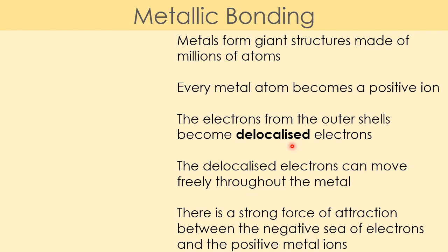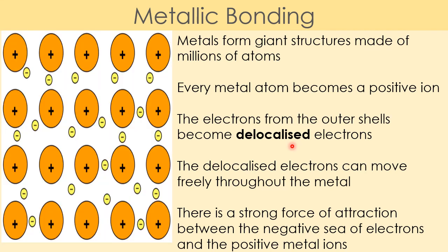Between the negative sea of electrons — all those delocalized electrons moving around — and all of our positive metal ions, there is a very strong force of attraction. Opposites attract, and that holds the metal ions in place giving us a giant structure. In the diagram you can see positive metal ions represented with a plus sign, and the negative delocalized sea of electrons moving freely around them. These positive ions are all attracted to the negative electrons, which helps hold them in place.